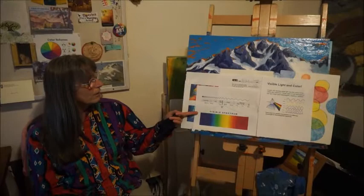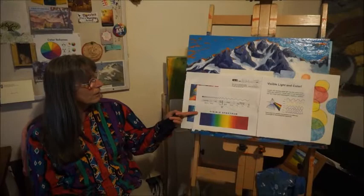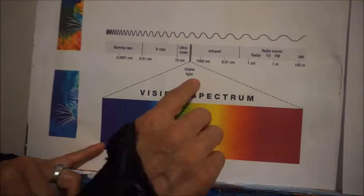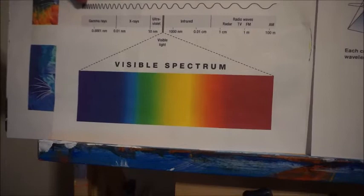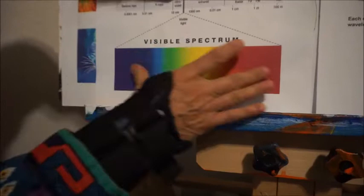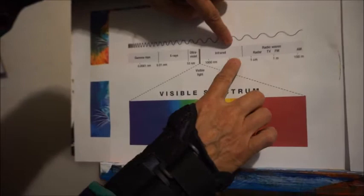Color is actually a wavelength. This is the visible spectrum — that means what we can see — and it comes out of white light, this little band right here. There are all kinds of wavelengths, and color is certain wavelengths. On the very short wavelengths we have gamma rays and x-rays going up to ultraviolet. Then we have the visible light spectrum, this tiny little band that we can see.